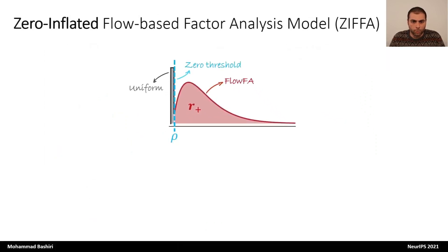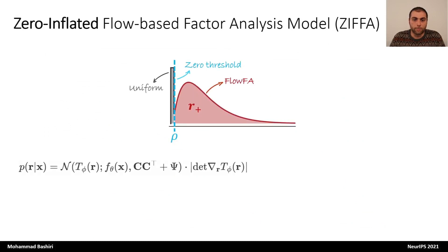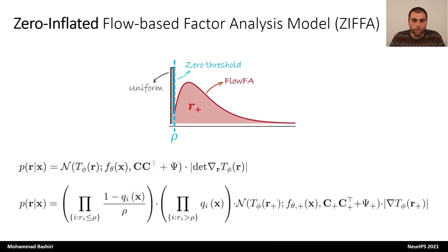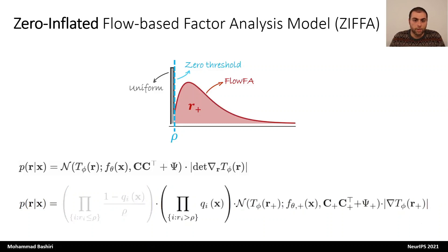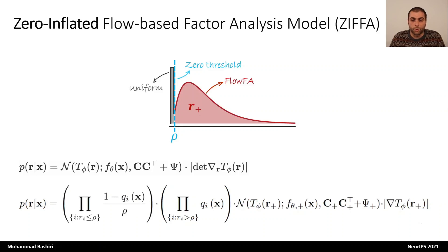With this modification, our objective function changes, where we have the uniform distribution for neurons that have responses below the threshold, and for neurons that have responses above the threshold, we use the FlowFA model where we can learn the dependency structure among the corresponding neurons. We call the model zero-inflated flow-based factor analysis, in short ZFA.